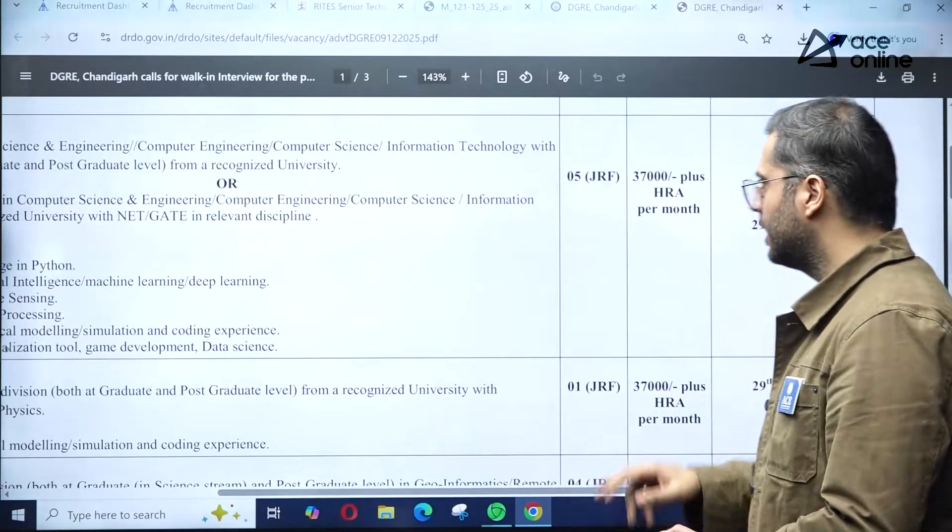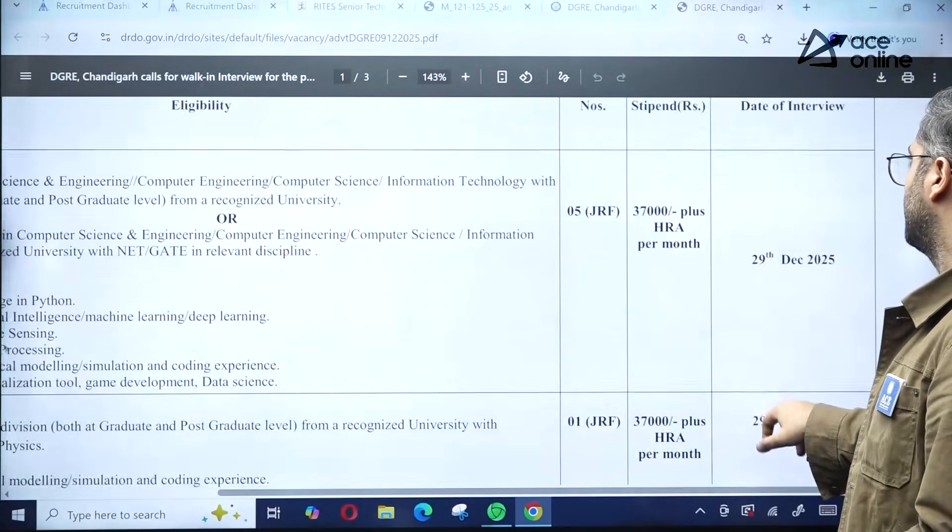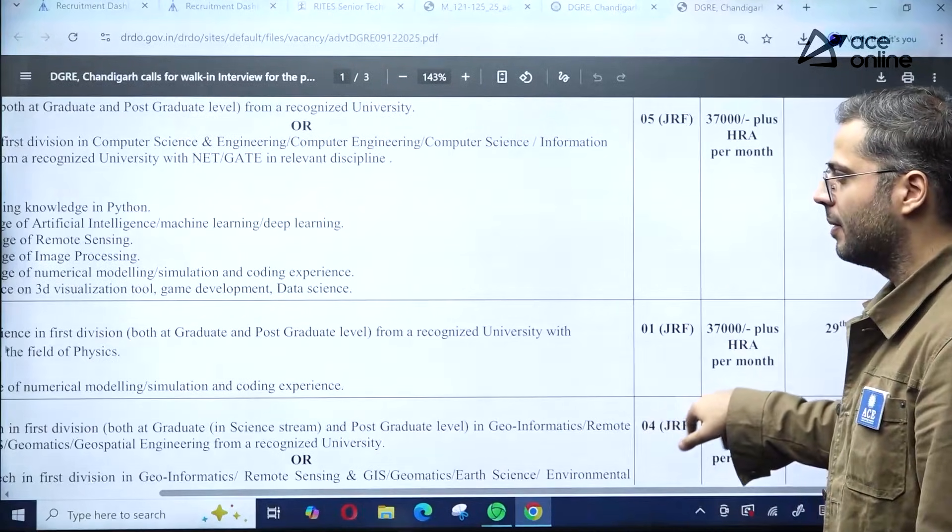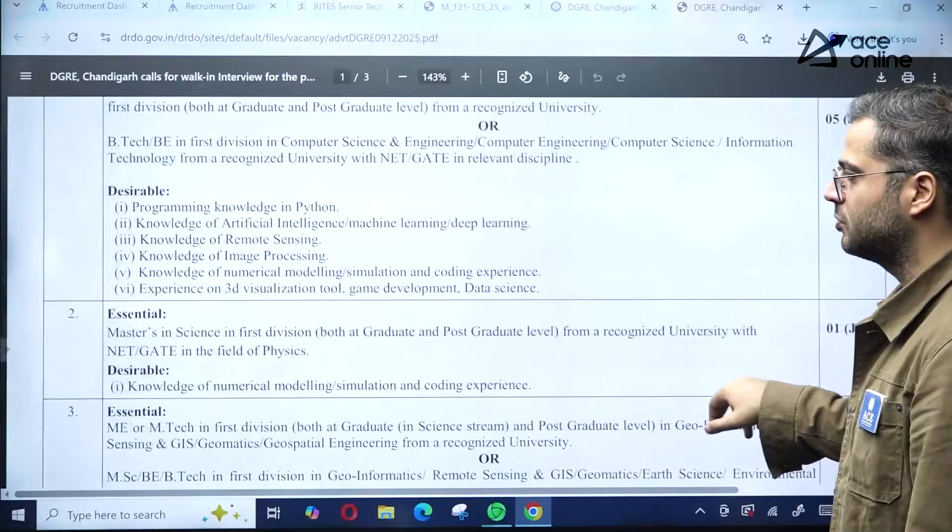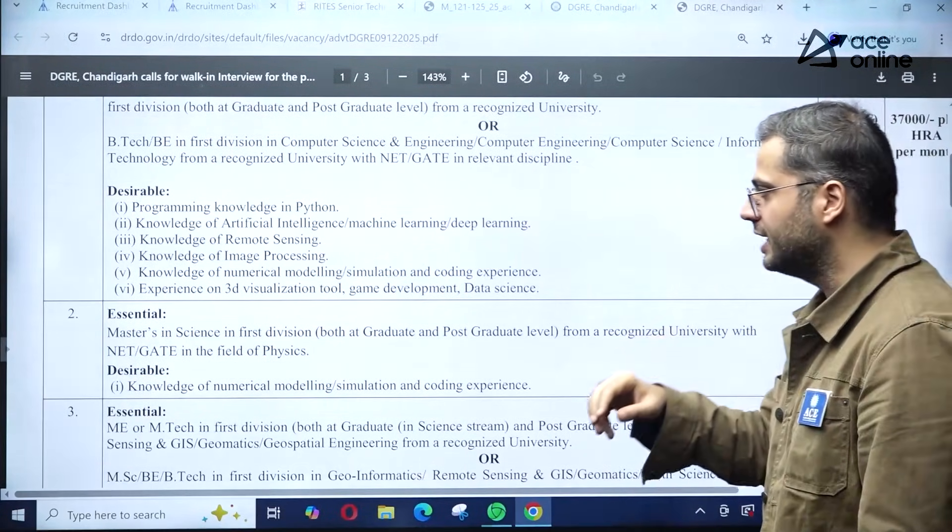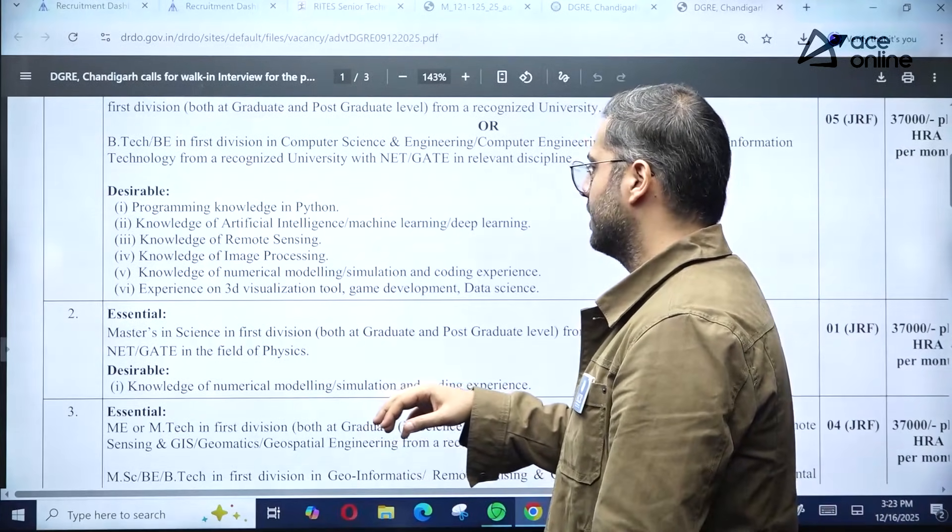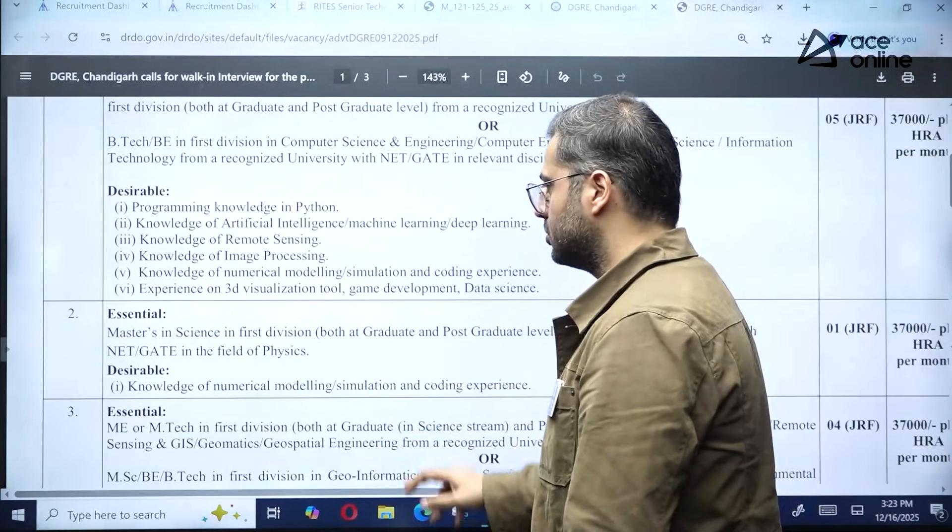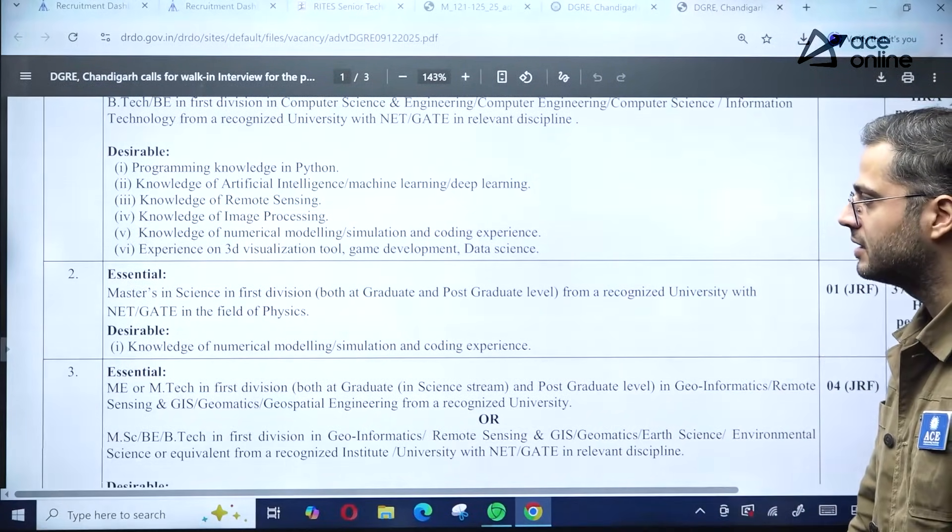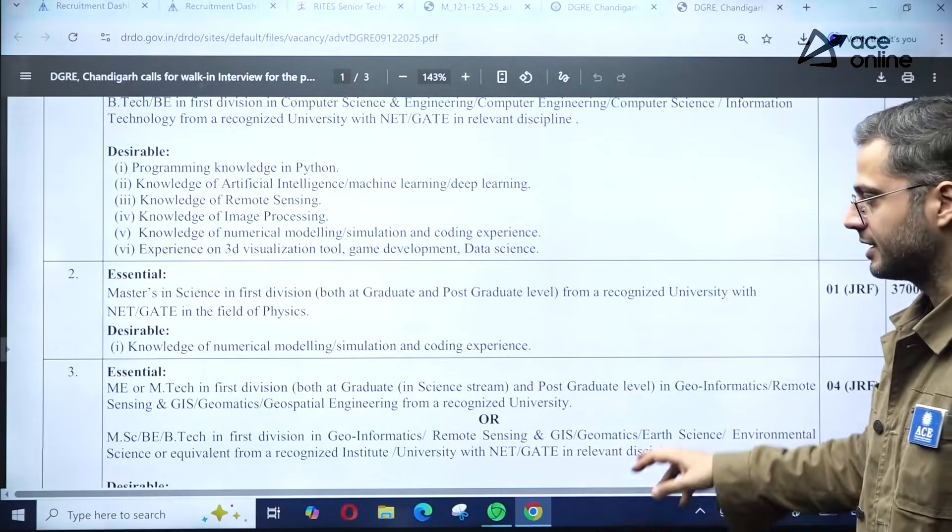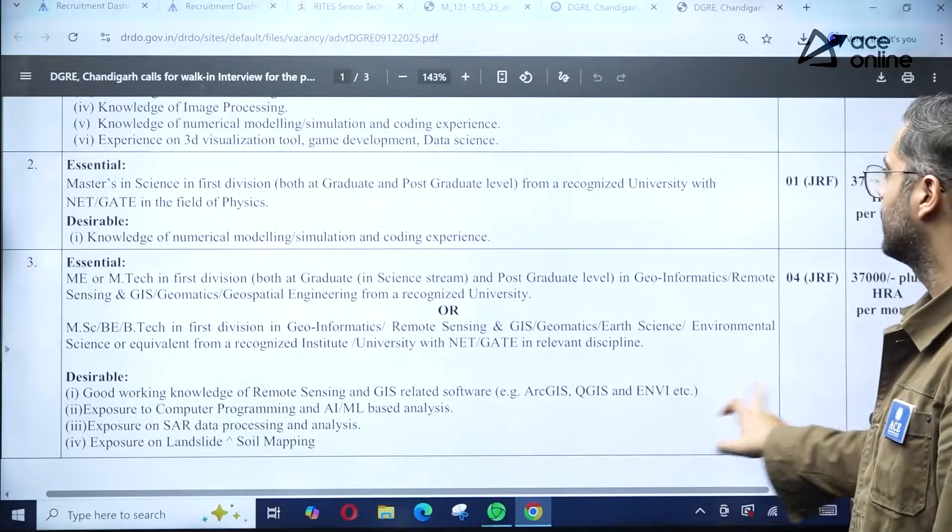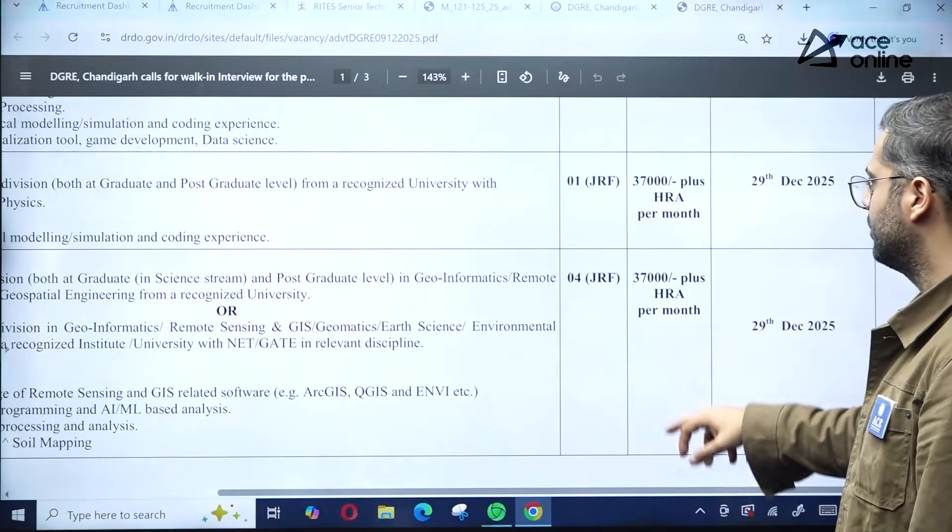Next, essential qualifications for Masters of Science students: MSc at both graduate and postgraduate levels with a valid NET or GATE scorecard in the field of Physics. Knowledge of numerical modeling, simulation, coding, and experience is required. One JRF position is available with interview date 29 December.